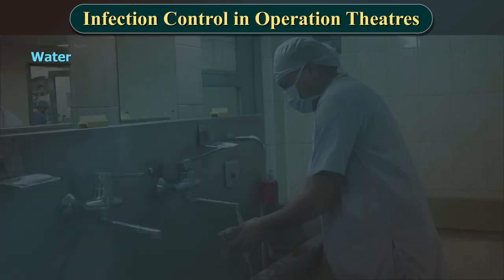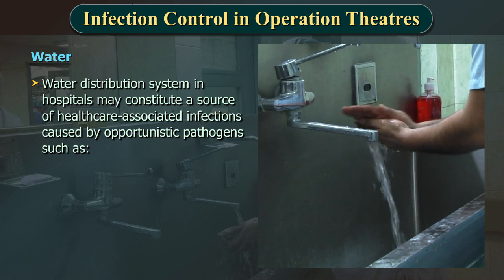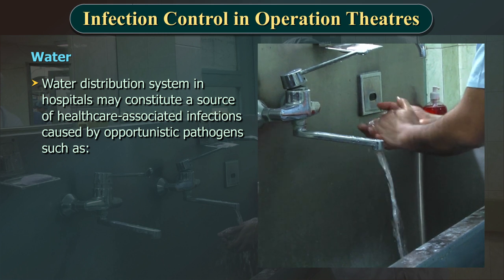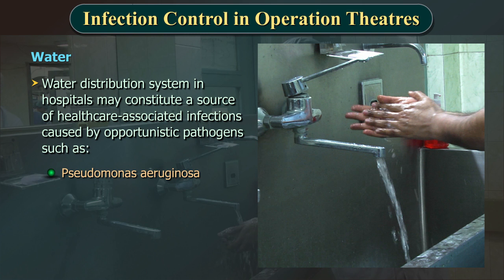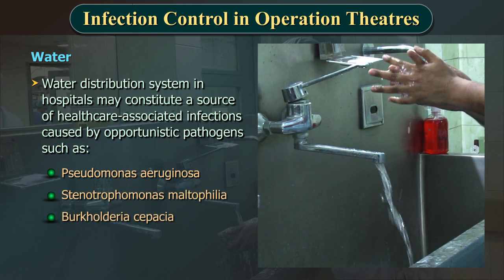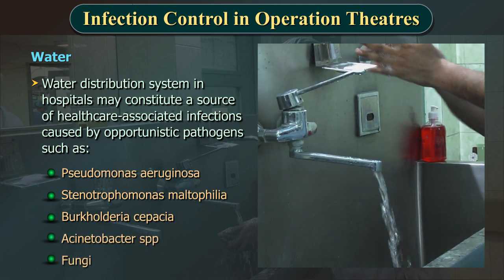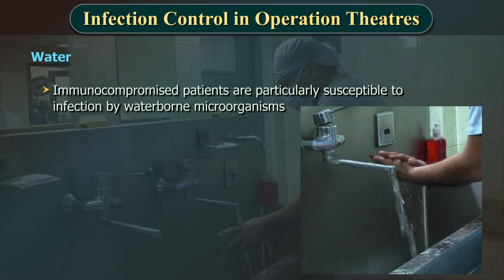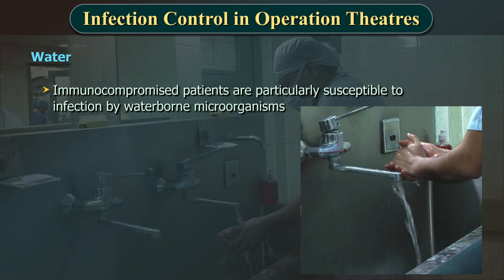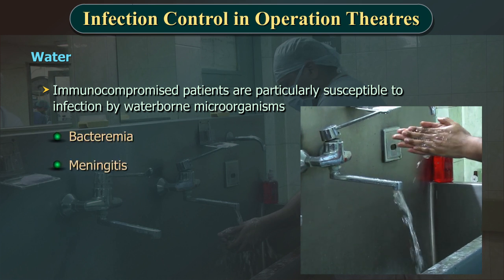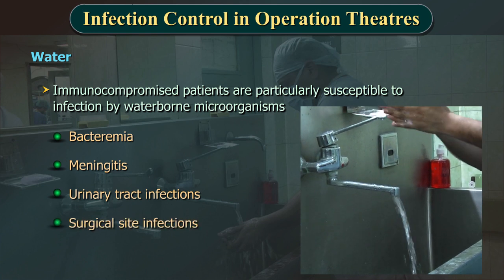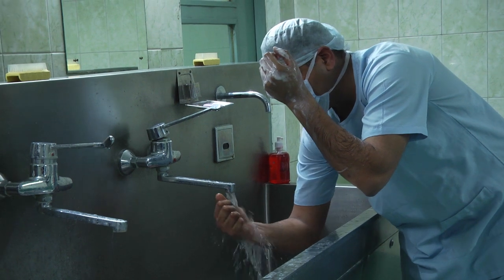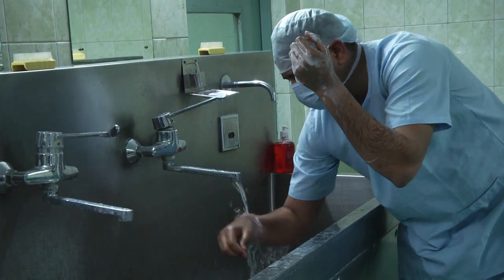The water distribution system in hospitals may constitute a source of healthcare-associated infections caused by opportunistic pathogens such as Pseudomonas aeruginosa, Stenotrophomonas maltophilia, Burkholderia cepacia, Acinetobacter species and fungi. These are common sources of gram-negative bacteria and have been linked to infections in multiple hospital settings. Immunocompromised patients are particularly susceptible to waterborne microorganisms, which can cause bacteremia, meningitis, urinary tract infections and surgical site infections. Surgical hand antisepsis with medicated soap requires clean water to rinse the hands after application.